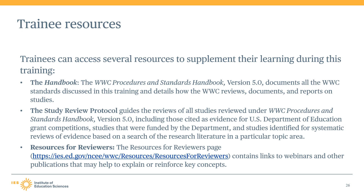On the WWC website, you can also access protocols used under previous versions of the standards. Under previous versions, topic area review teams sometimes had the ability to customize certain aspects of the standards, and any such customization was documented in those protocols. However, under version 5.0, the handbook and the study review protocol now govern the application of the standards, so newer topic area synthesis protocols will only specify eligibility criteria for interventions, samples, and outcomes relevant for a synthesis product, and will provide guidance for literature searches and prioritizing studies for review. The Resources for Reviewers page contains links to publications that reinforce key concepts, including webinars that provide timely updates on WWC products or technical assistance training for reviewers, researchers, and practitioners.